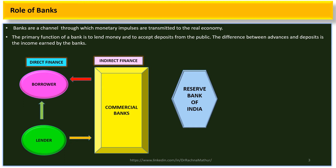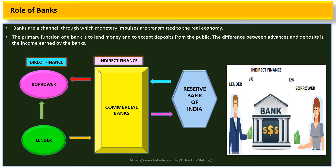Commercial banks also obtain funds from the Reserve Bank of India, which is the banker's bank, and lend surplus funds to RBI in liquidity management under monetary policy. The primary function of a bank is to lend money and accept deposits from the public; the difference between advances and deposits is the income earned by banks. For example, a bank pays 8% interest to the lender and charges 12% interest from the borrower, so the 4% difference is the earning of the bank.